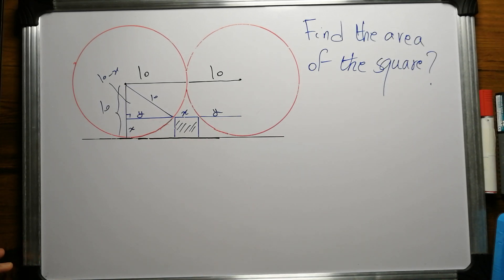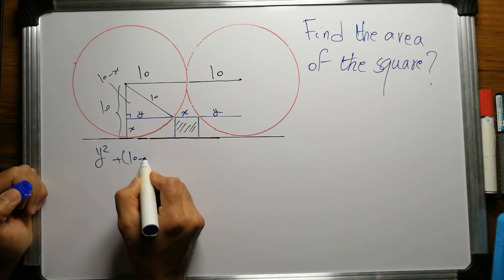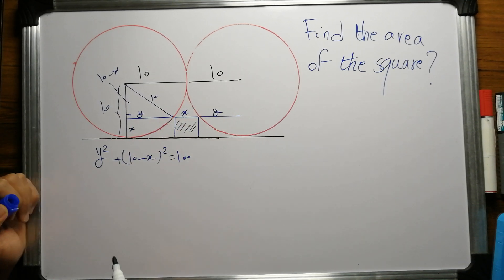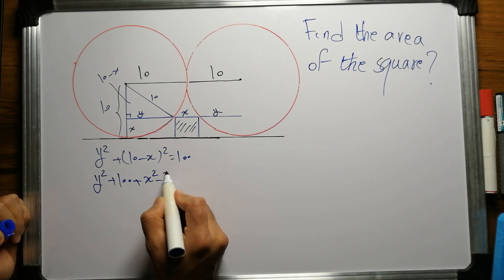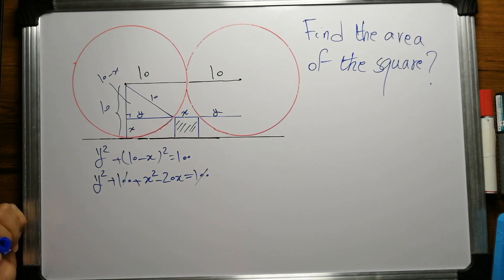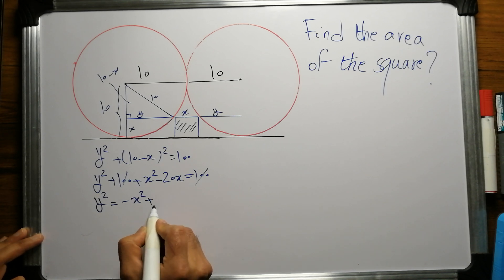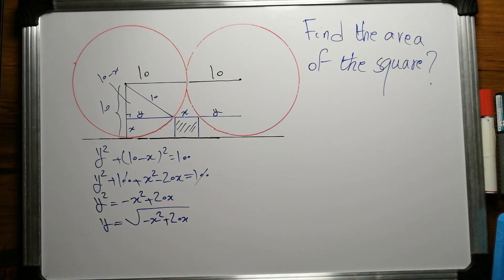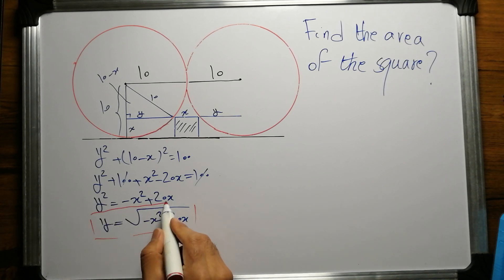Let's write down the Pythagorean theorem. We know that y² plus (10 - x)² equals the hypotenuse squared, which is 10² = 100. Let's expand this bracket: y² + 100 + x² - 20x = 100. These two cancel out, and we have the relationship y² = -x² + 20x, so y = √(-x² + 20x). That's the first relationship that we found, and this is very important because we're going to replace this y into another equation.